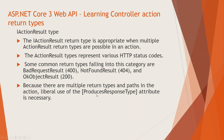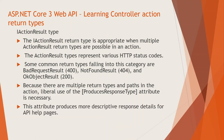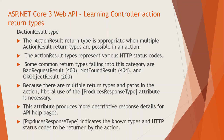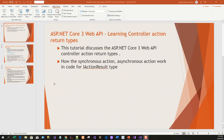Because there are multiple return types and paths in the action, liberal use of the ProducesResponseType attribute is necessary. This attribute produces more descriptive response details for API help pages. ProducesResponseType indicates the known types and HTTP status codes to be returned by the action.